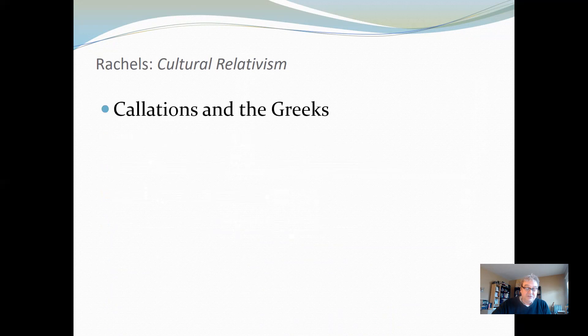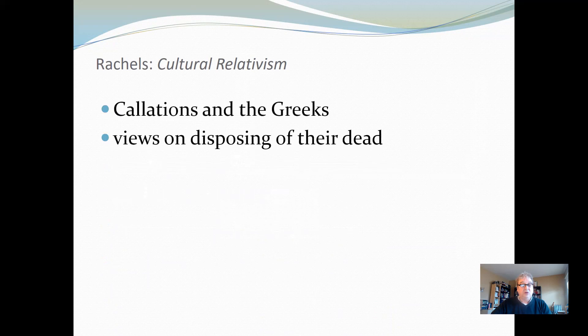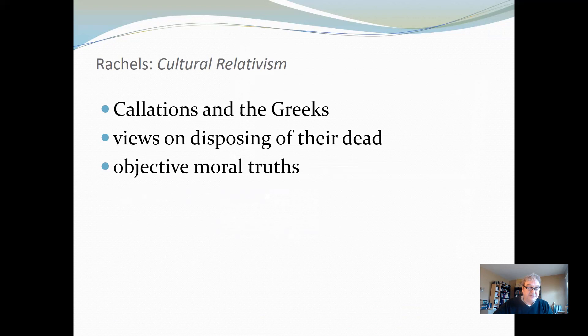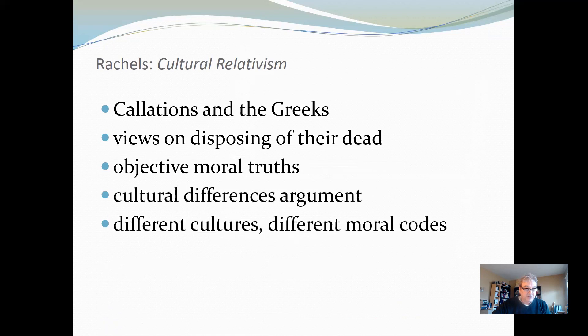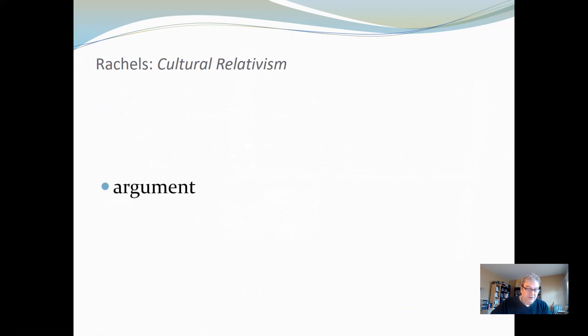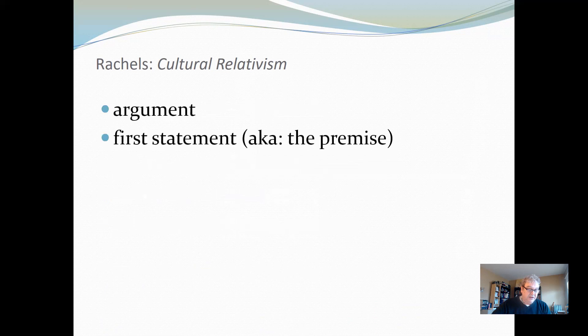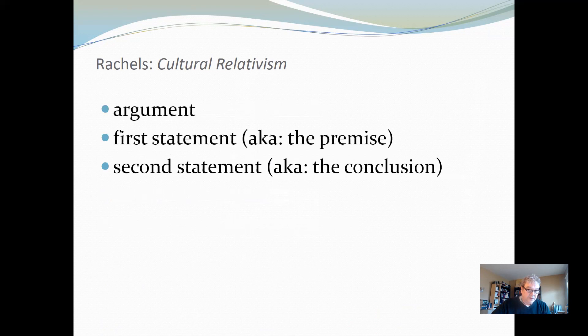Rachels makes a distinction at the beginning of the article between the Calatians and the Greeks — two different cultures — and their different views on disposing of their dead. This comparison is meant to underlie what moves many people to believe there must not be any objective moral truths. The author then lays out the cultural differences argument, which states that because different cultures have different moral codes, therefore there is no objective truth in morality.